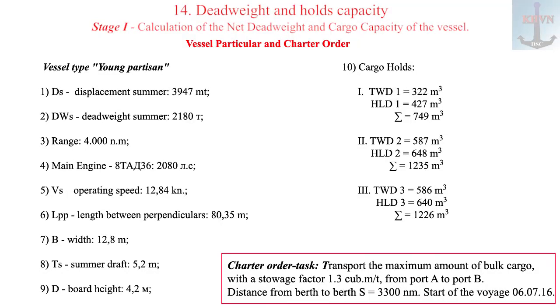Summer deadweight 2180 tons. Summer draft 5.2. Range 4,000 miles. Operating speed 12.84 knots. Order of the charter or simply order task: transport the maximum amount of bulk cargo, with a stowage factor 1.3 cubic meters per ton, from port A to port B distance from berth to berth S equals 3300 nautical miles. Start of the voyage June 7, 2016.